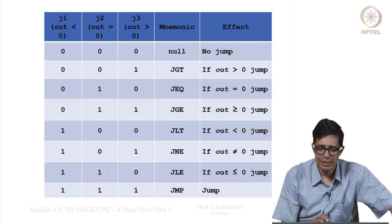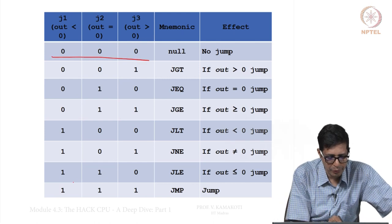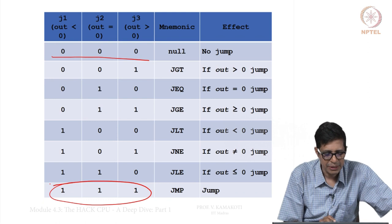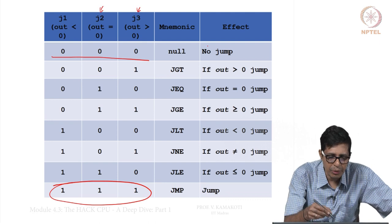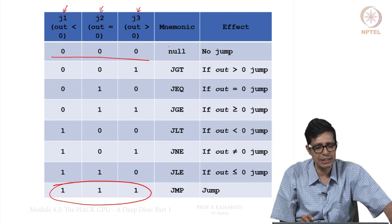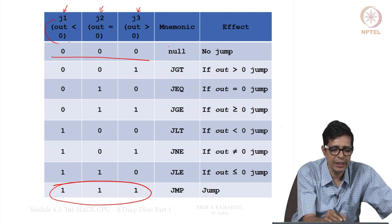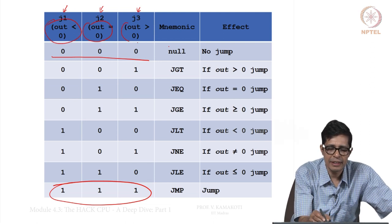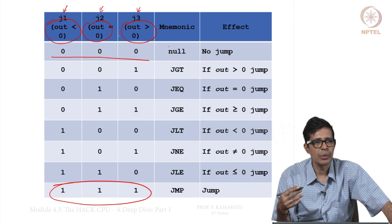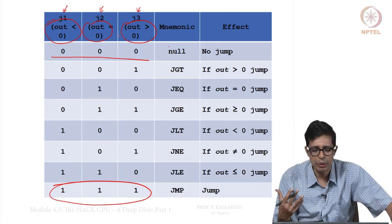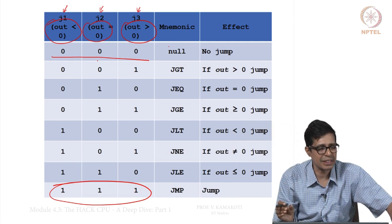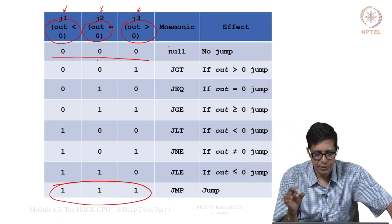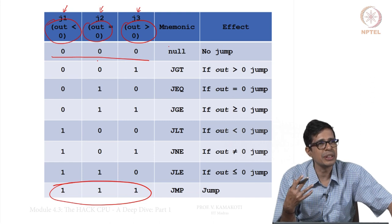Similarly the jump bits: J1, J2, J3 — 000 means no jump, 111 means unconditional jump. J3 stands for out greater than 0, J2 stands for out equal to 0, and J1 stands for out less than 0. When the CPU sees a non-zero value on the J bits, it is a jump instruction. That is how the CPU interprets the instruction.